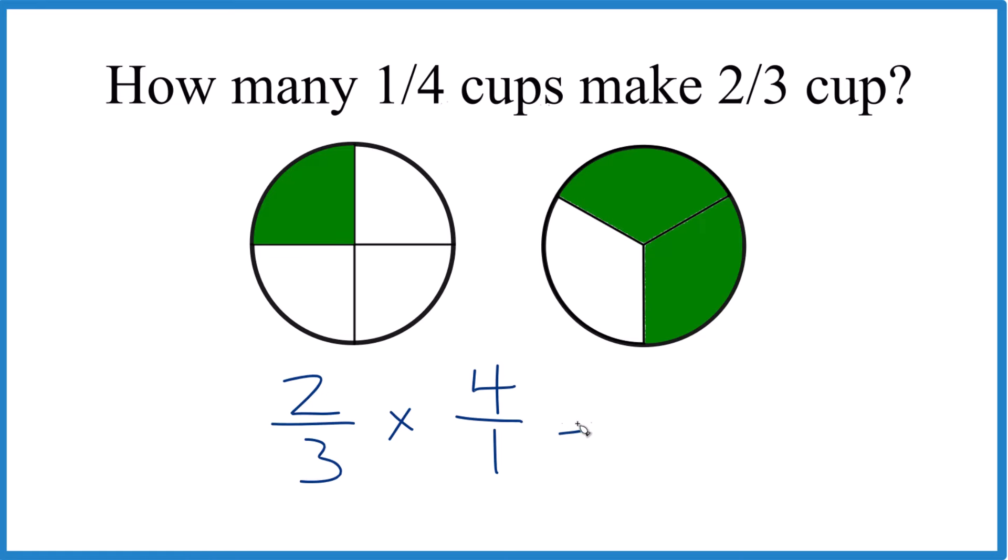And now you just multiply two times four is eight, three times one is three. So eight-thirds of these one-fourth cups goes into two-thirds cup.